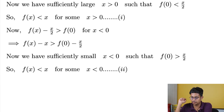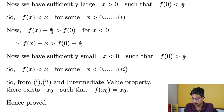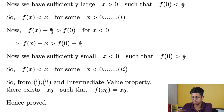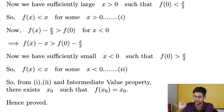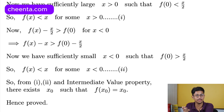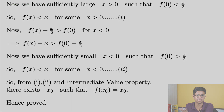From the intermediate value property, using (1) f(x) < x for some x > 0 and (2) f(x) > x for some x < 0 — note the 'less than' sign earlier was a typo, it should be greater than — by the intermediate value property there exists x₀ such that f(x₀) = x₀. Thank you.